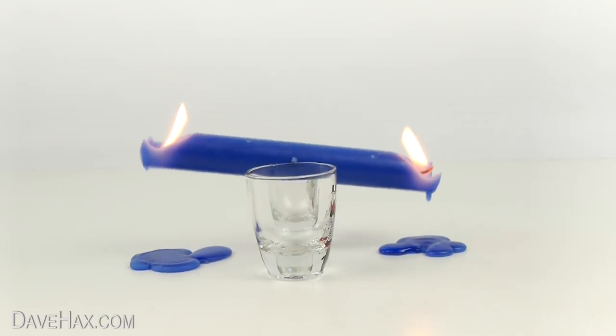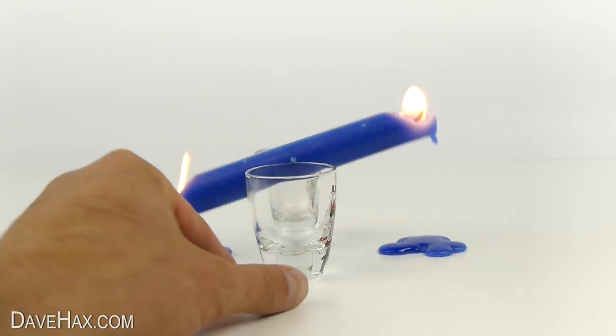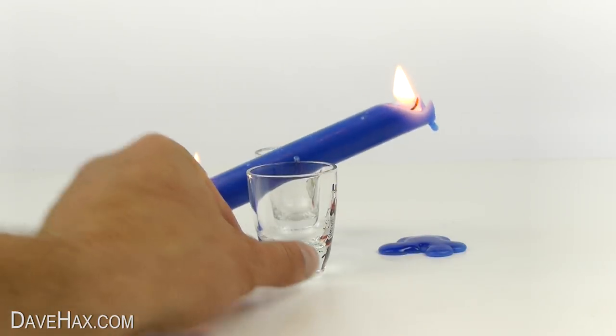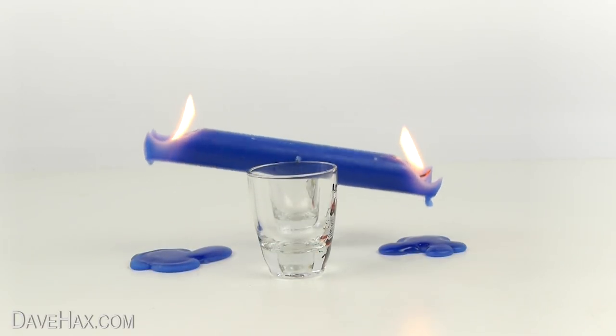To stop it happening again, you can push the glasses together so they're just squeezing the candle. This friction should slow it down and give you a more uniform seesaw.